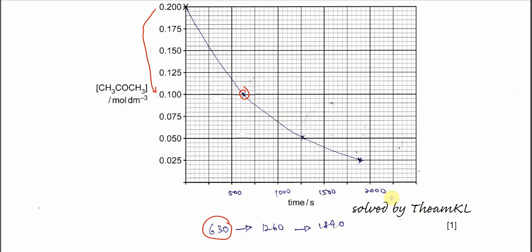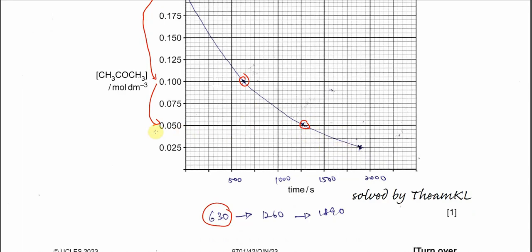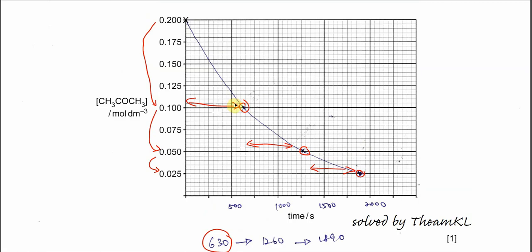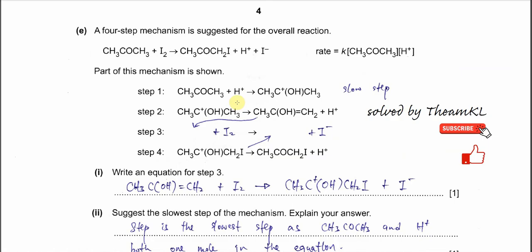The second half-life is also 630 seconds: concentration reduces from 0.1 to 0.05 at t = 1260 seconds. The third half-life takes concentration from 0.05 to 0.025 at t = 1890 seconds. Each half-life is consistently 630 seconds, confirming first-order behaviour. Once all three points are plotted, draw a smooth curve through them.